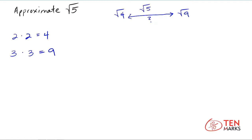To figure out which value the square root of 5 will be closer to — the square root of 4 or the square root of 9 — you have to determine which perfect square 5 is closer to. The first approximation is very crude: you look and say, well, 5 is closer to 4 than it is to 9, which means the square root of 5 will be closer to the square root of 4 than it is to the square root of 9. So you have an idea that the square root of 5 is going to be somewhere closer to this end of the number line that you're loosely building here.